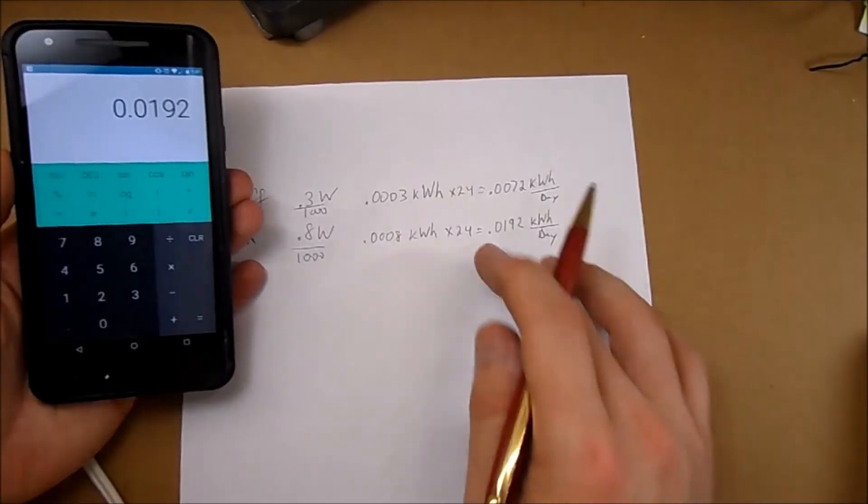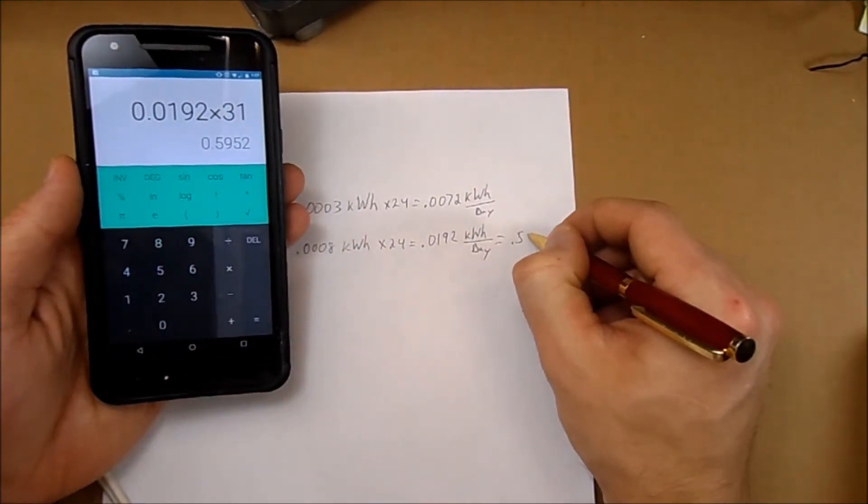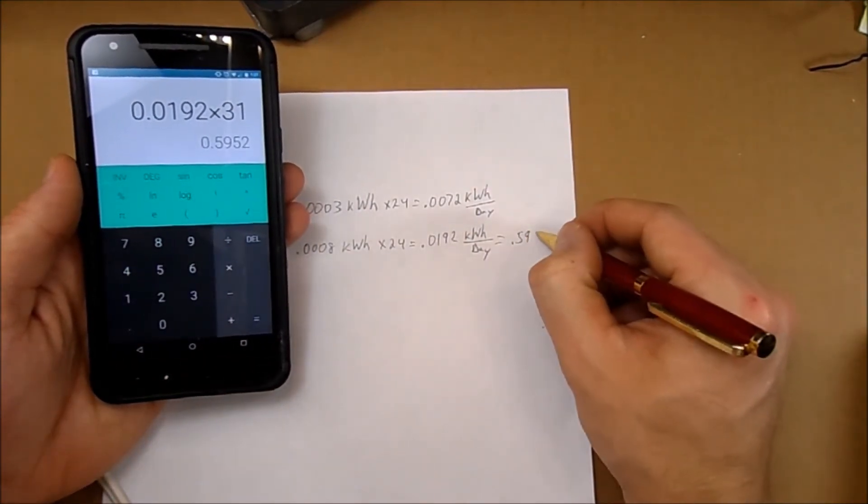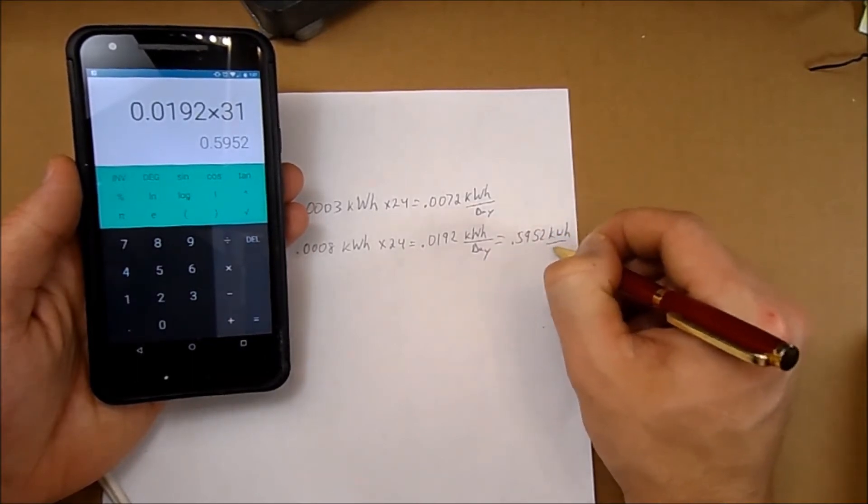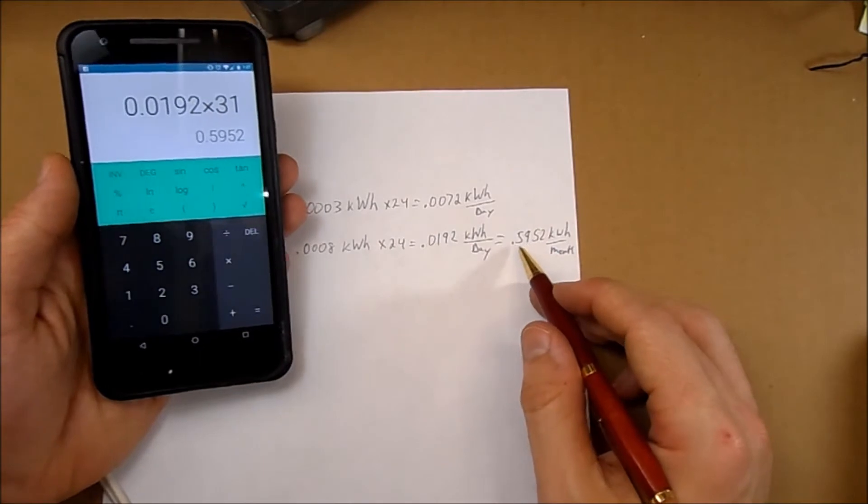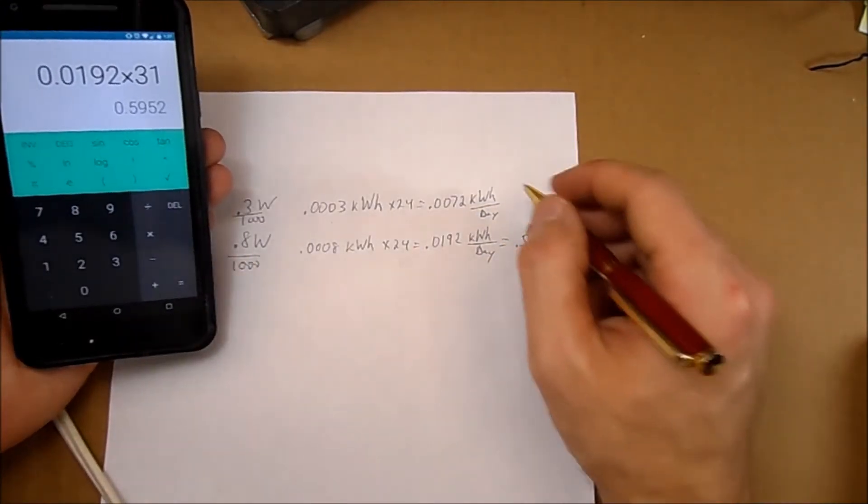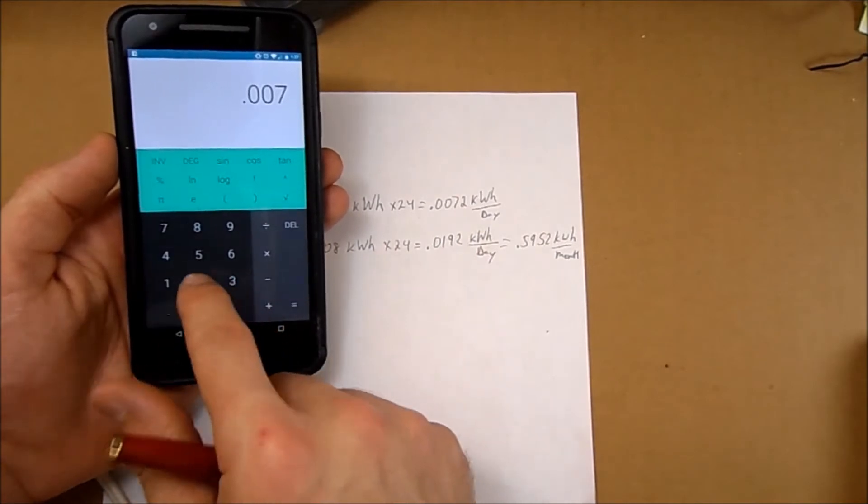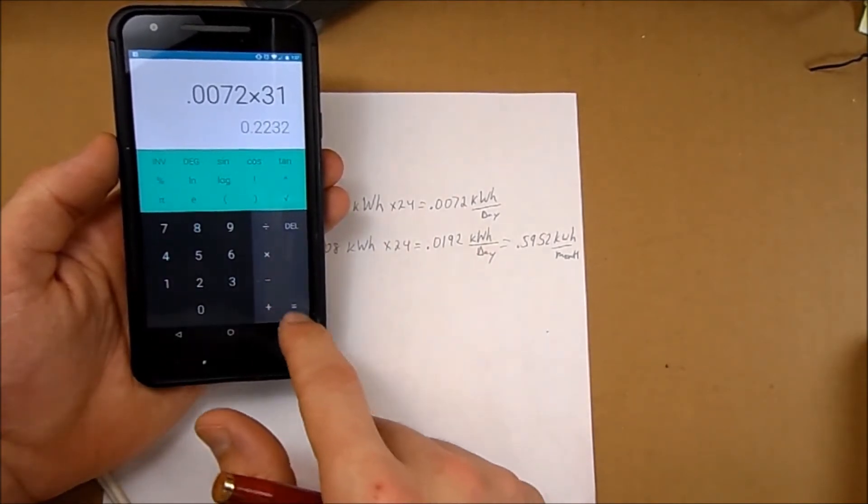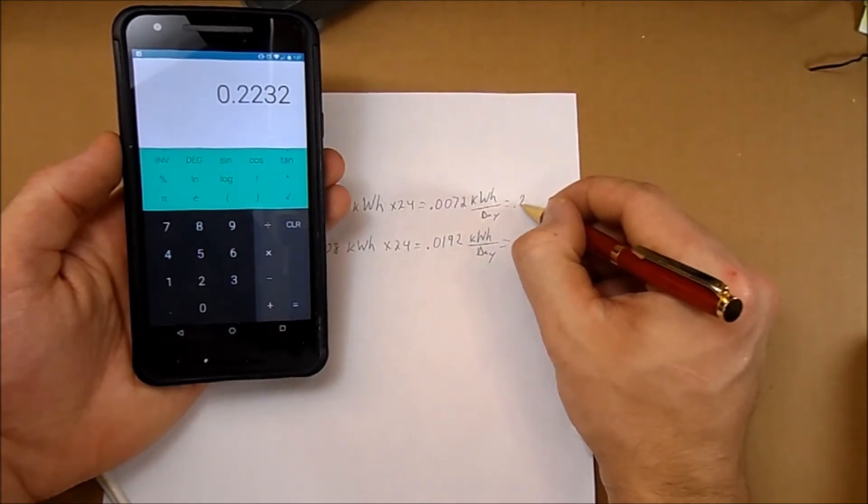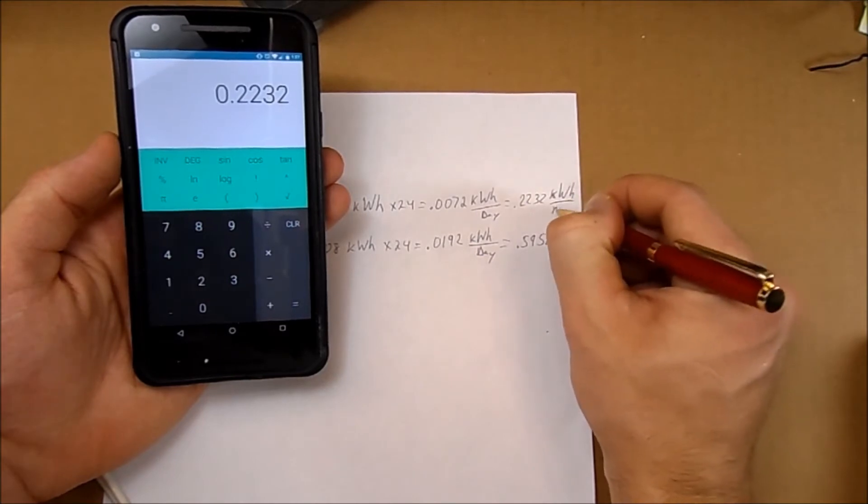And per month, times 31 equals 0.5952 kilowatt hours per month. So this would be basically half a kilowatt hour per month if you left this on. And 0.0072 times 31 equals 0.2232 kilowatt hours per month.